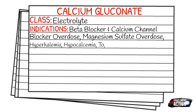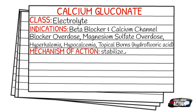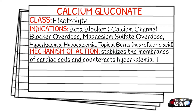The mechanism of action of calcium gluconate is that it stabilizes the membranes of the cardiac cells and it also counteracts hyperkalemia. This reduces the chance of fibrillation.